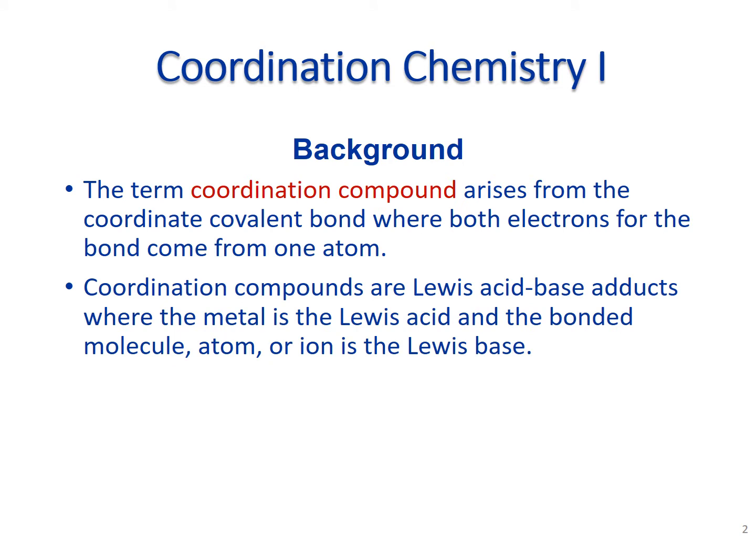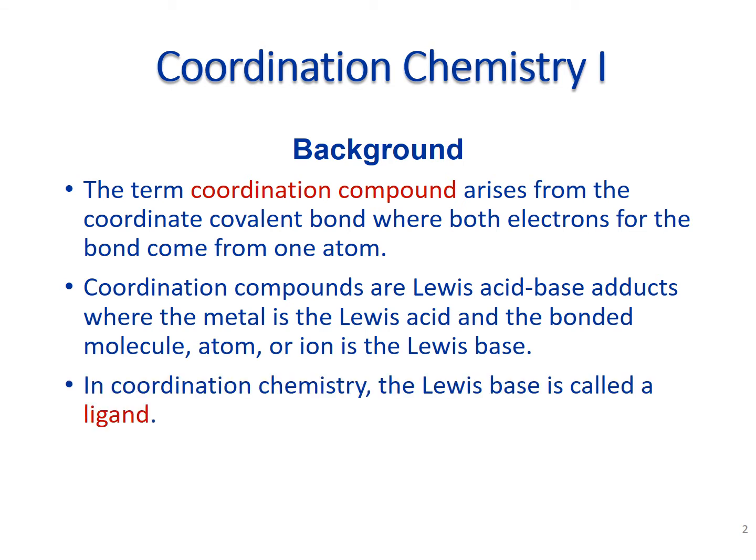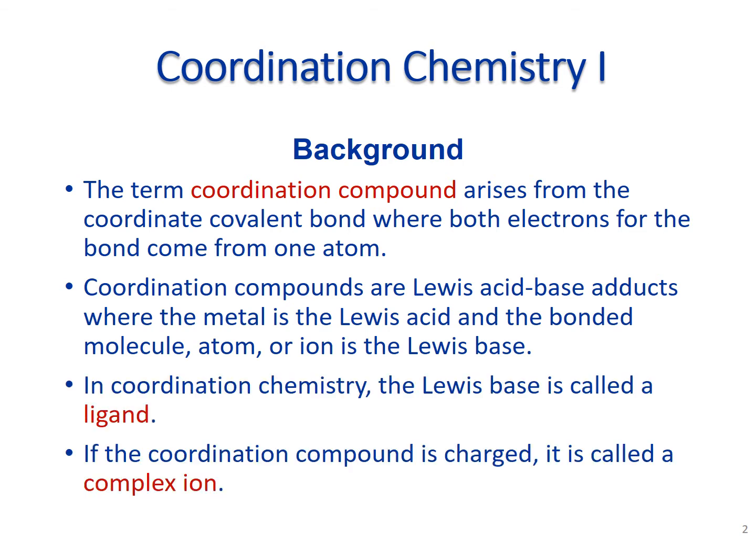Coordination compounds are Lewis acid-base adducts, so the metal is going to be the Lewis acid and it'll be bonded to a molecule, atom, or ion — that is the Lewis base. These Lewis bases we call ligands. A coordination compound can be charged, similar to a polyatomic ion. You can have one that is neutrally charged, or one with positive or negative charges, and those in particular we call complex ions.